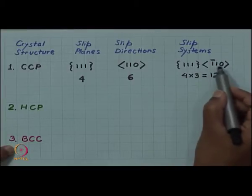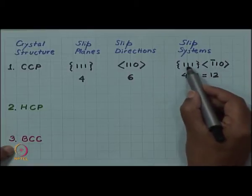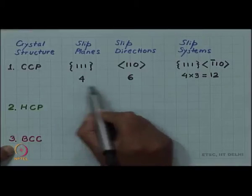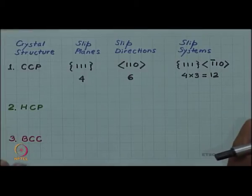It shows that the slip direction should lie on the slip plane and that is why we have 4 into 3, 12 slip systems and not 4 into 6, 24 slip systems.